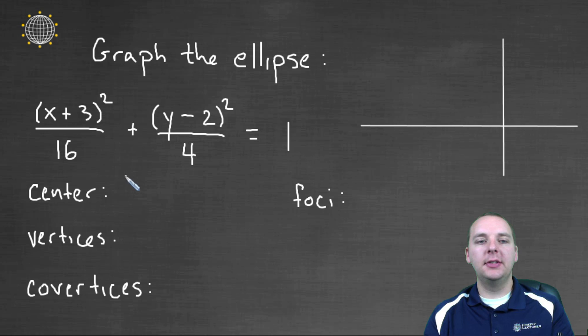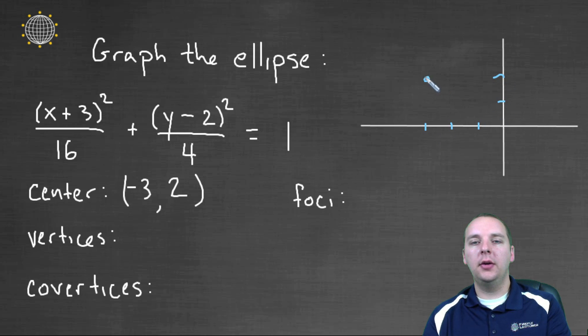I know for the center, the center is at (h, k), and the formula for the ellipse is (x - h)² and (y - k)². So the k is clearly 2, and the h would be negative 3, because you'd have to have x minus negative 3 to be the same as x plus 3. So that's the center, we can go ahead and mark that down: negative 3 comma 2, right here.